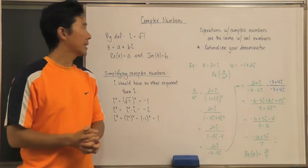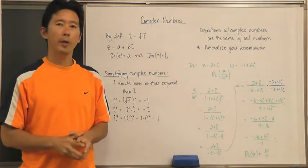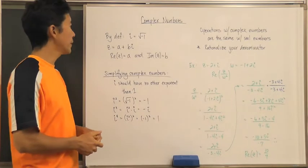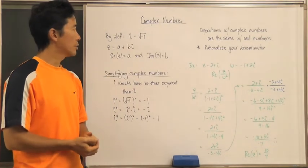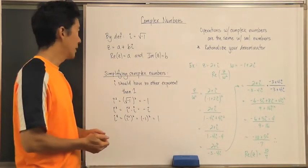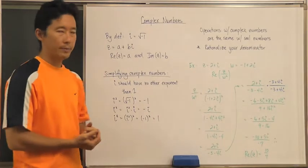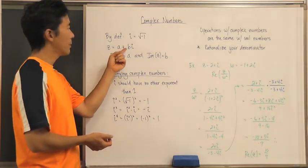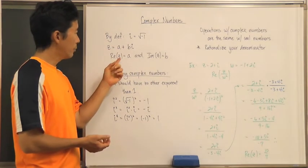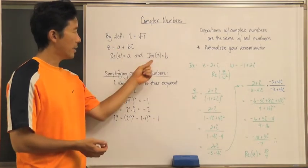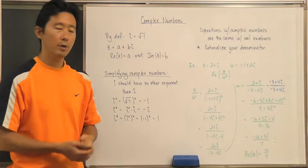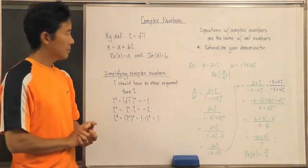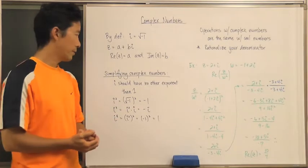Hello everyone, let's take a look at how we can work with complex numbers. By definition, i is equal to the square root of negative one, and any complex number is in the form a plus bi, where the real part of z is a and the imaginary part of z is b — the coefficient of the imaginary unit.